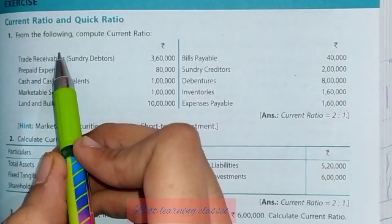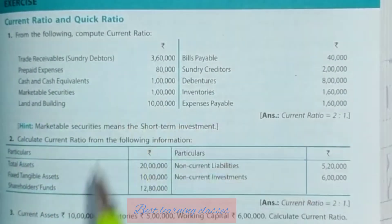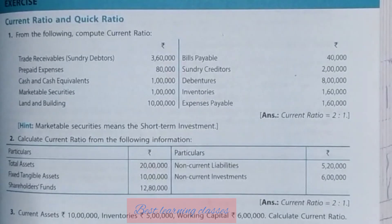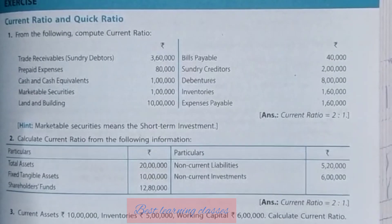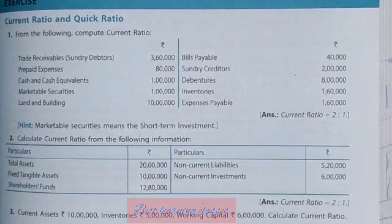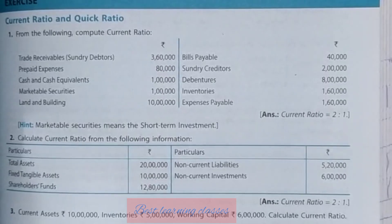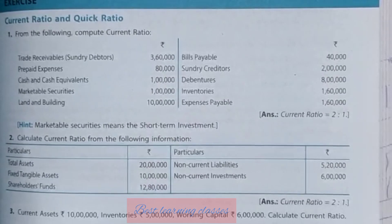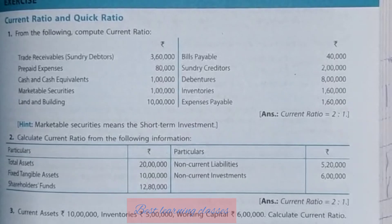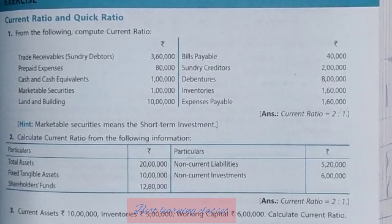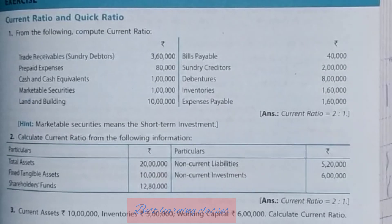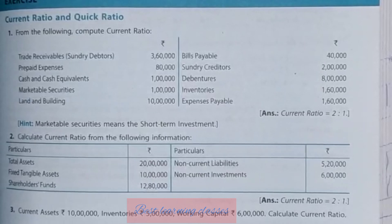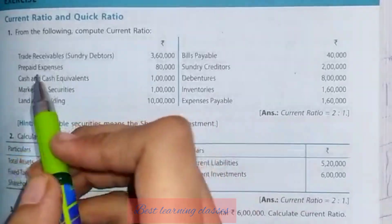Question number 1: from the following, compute the current ratio. Whatever formulae are to be used, I will tell you. What to include, what to take — all of that I will explain. Theory-related content will be in a separate video. The main role in this chapter is played by formulae. If the formula is learned, then there will be no difficulty in this chapter at all.